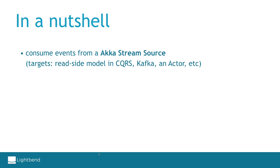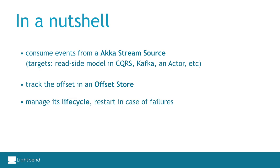When building event-driven systems we often consume events from some source and generate data to some other place — we call it a projection. It can be the read-side model in a CQRS application, publishing a message to a Kafka topic, sending a message to an actor, or any other target. These events are associated with an offset. As we consume them we want to keep track of the last processed offset so that in case of failures or restarts we can resume from where we stopped. A projection is conceived to continuously run in the background, and if it stops we need to restart it automatically and be able to distribute consumption in an Akka cluster.